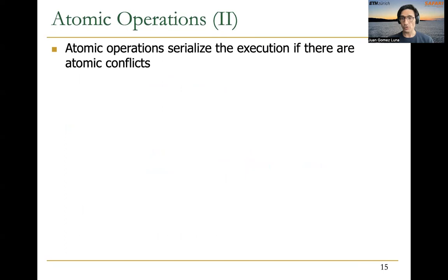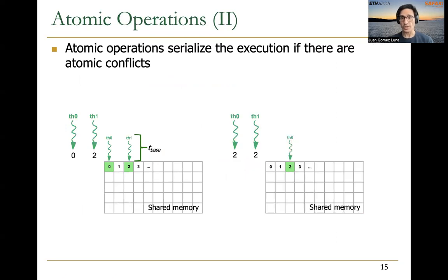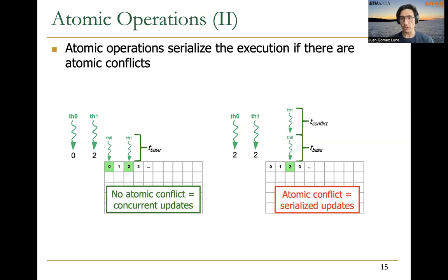Atomic operations are very useful because they guarantee correct execution, but they serialize execution when there are atomic conflicts. For example, if we have two threads in the same warp that need to update two different memory locations using an atomic operation, then we will be fine — there will just be a certain latency. But if these two threads need to update the same memory location, the accesses will be serialized and the latency will be longer because we have an atomic conflict.